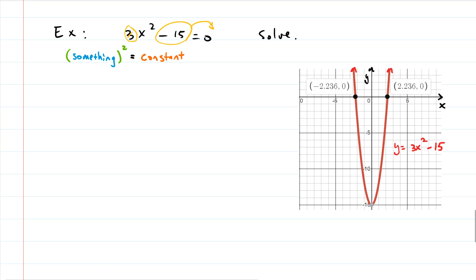Let's solve for x. 3x squared minus 15 equals 0. Let's first take the negative 15 to the other side, which makes it positive.